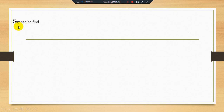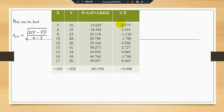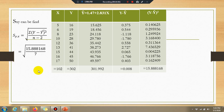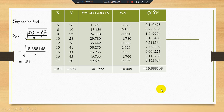Our ultimate objective is to find the standard error of the regression line. Using the formula for standard error, we need summation (Y minus Ŷ) squared — this is called the residual sum of squares (RSS). We take the square of the error series and sum it, getting 15.88168. Substituting into the standard error formula gives a standard error of regression line equal to 1.51.